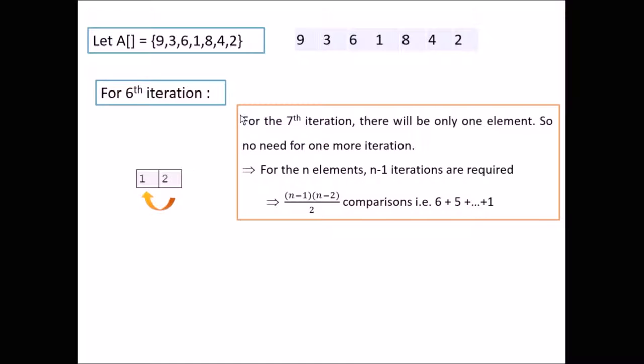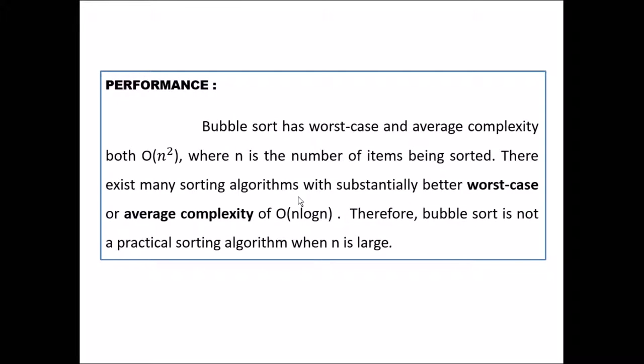And the code for this working I will be explaining in my next tutorial. Coming to the performance of this bubble sort, it has worst case and average complexity both O of n square, where n is the number of items being sorted. And there also exist many sorting algorithms which have better complexity even for the worst case, that is big O of n log n. So bubble sort is not a practical sorting algorithm when n is very large. But when n is very small, then it has the best case of big O of n.